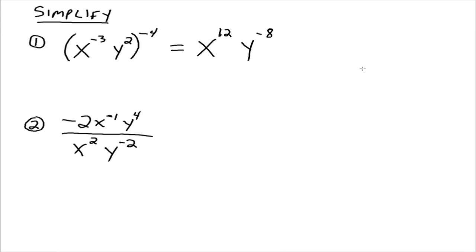And then, okay, so now what do I have? Well, I've got x to the 12th, that's cool, and then I have y to the negative 8. Well, we typically don't like to have negative exponents running around. We would prefer to have them written with positive exponents. So we need to make y to the negative 8 have a positive exponent, and we can drop that down to the denominator and have x to the 12th over y to the 8th. And that's it.